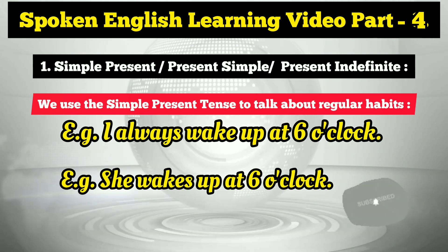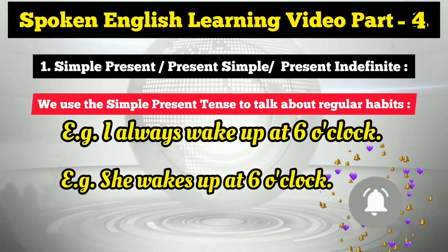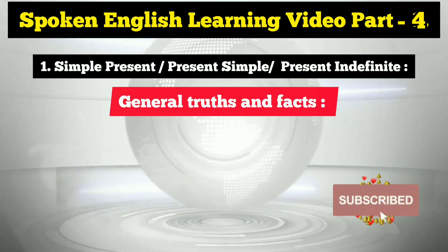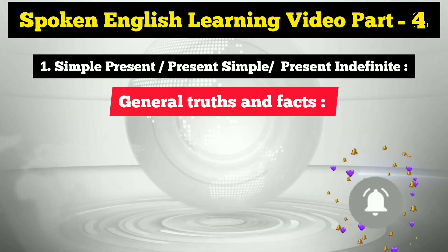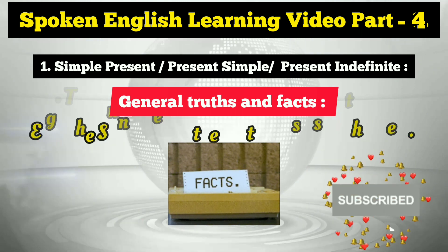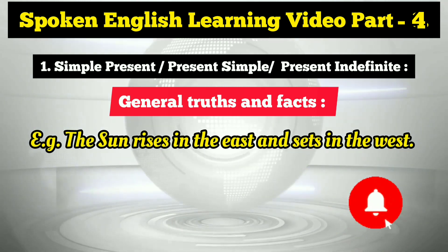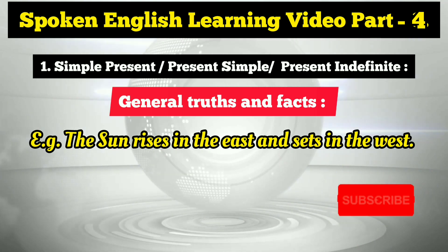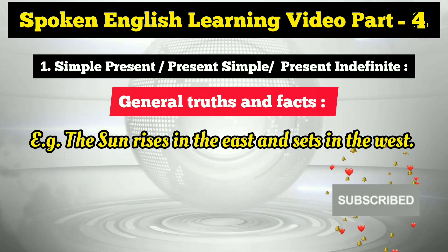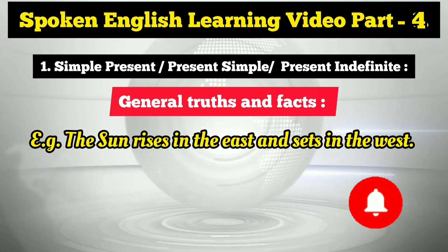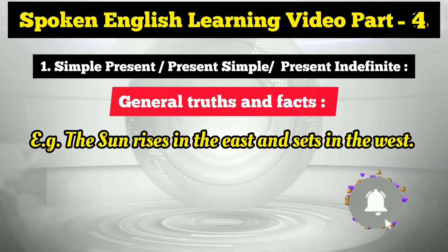Another situation where we use the simple present tense is for general truths and facts. For example: 'The sun rises in the east and sets in the west.' This is a general truth, and that is why we use the simple present tense here.